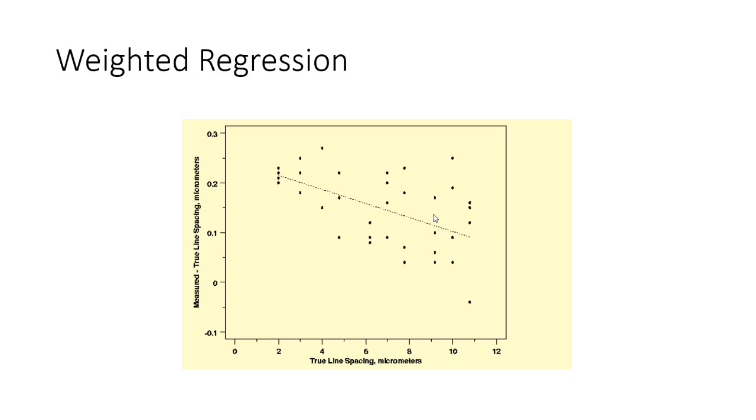Hence the objective of weighted regression is to give more weight to data points which are very close to the regression line and give less weight to the data points which are farther. That makes the estimates more accurate and more robust.